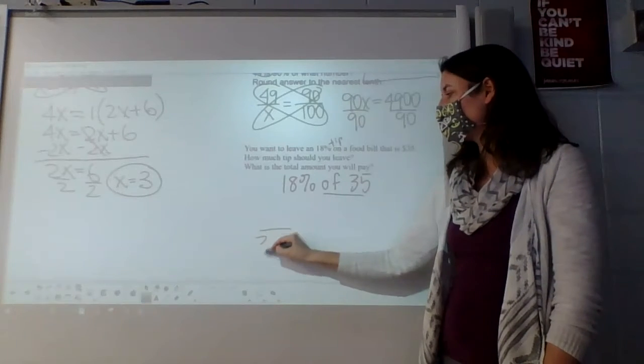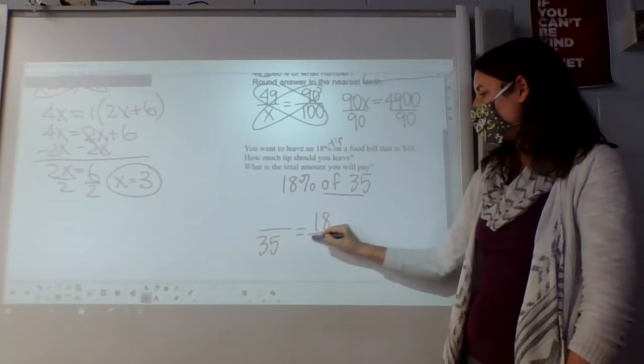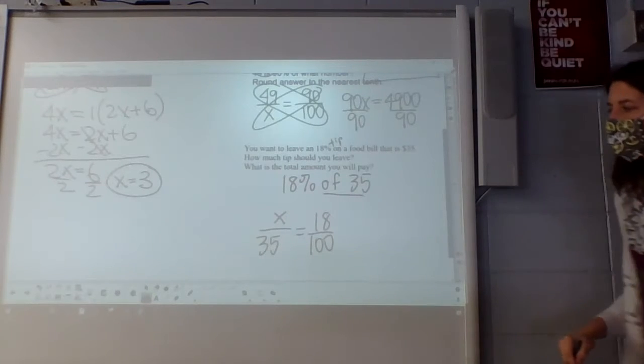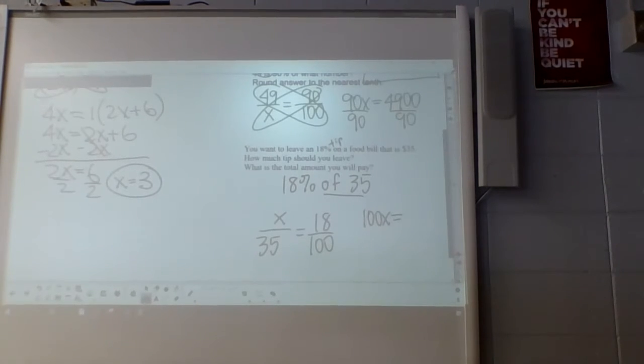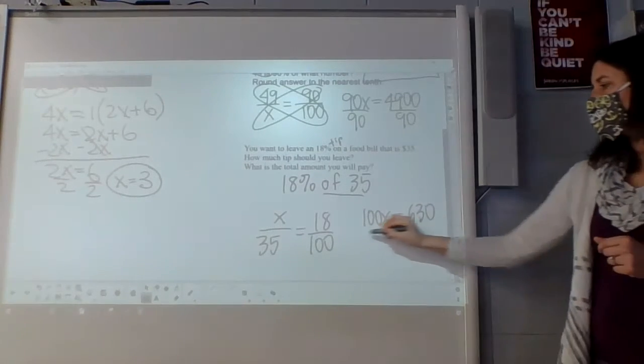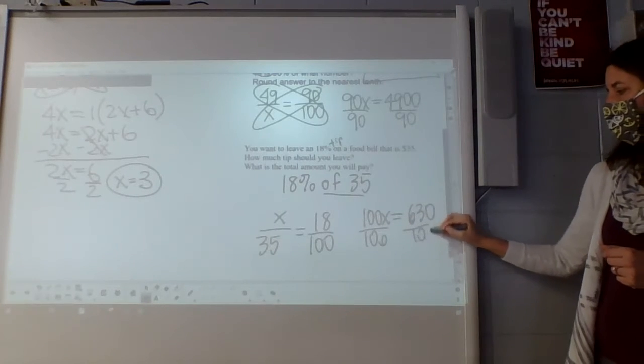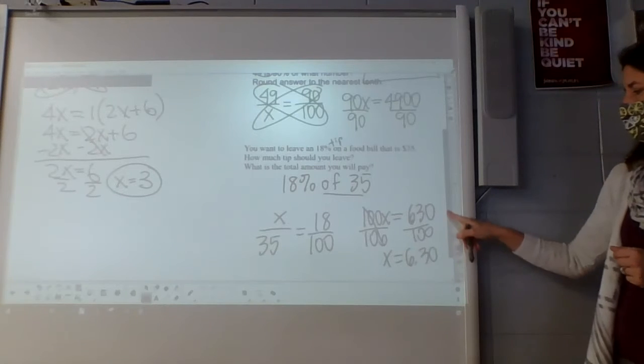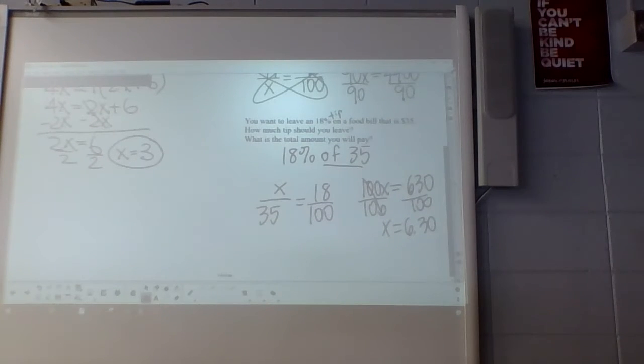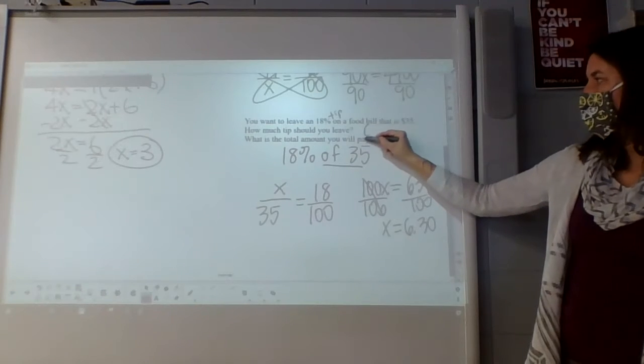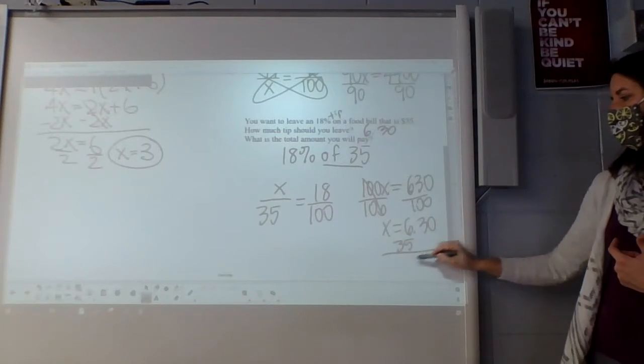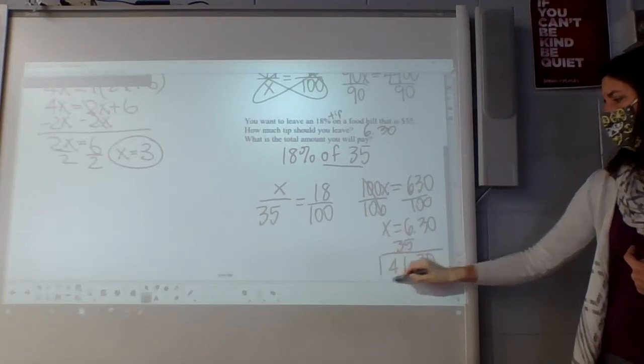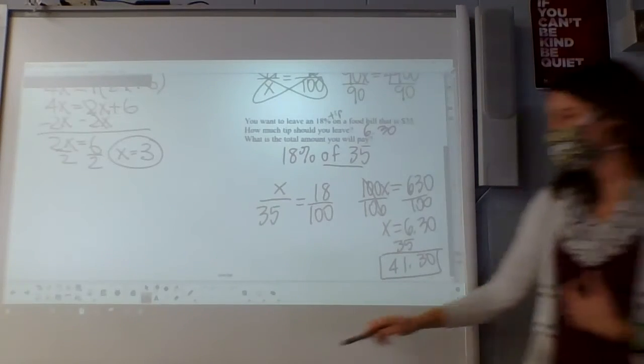So the of 35 means the 35 goes on the bottom. 18% of 100 or 18 out of 100. So we have to do our 18 times 35, 630, and divide by 100, which ends up being $6.30. That's how much the waitress would make on your bill for that night. So that should be the tip. And then the total amount you would pay, you would add that 35 on to that. So $41.30 would be the total bill then.